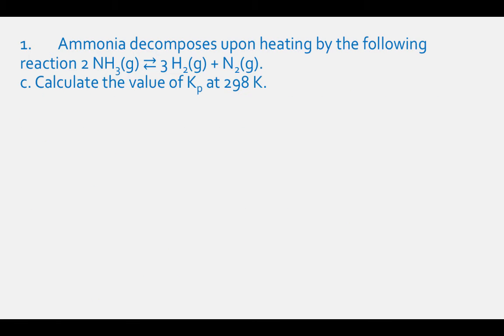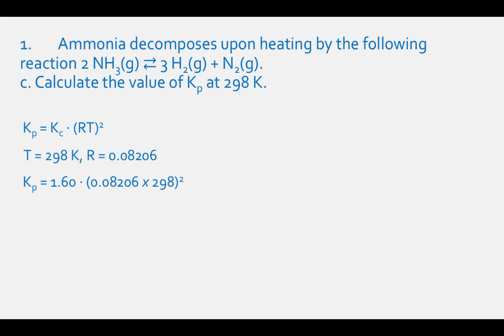To solve Part C, use Kp equals Kc times RT squared. Plug in Kc equals 1.60, R equals 0.08206, and T equals 298 K. Kp equals 1.60 times 0.08206 times 298 squared, which equals 957.